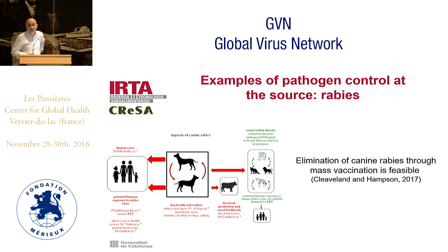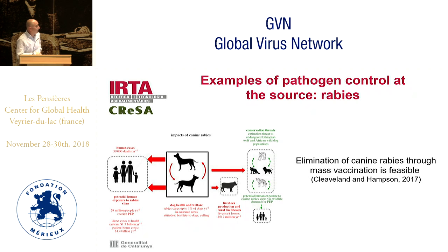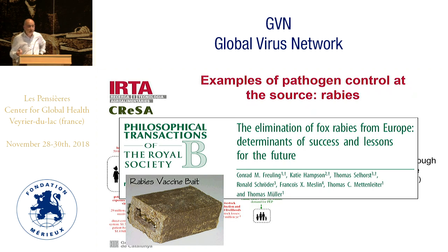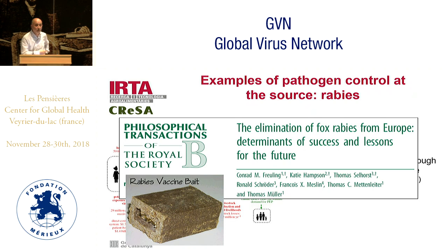Rabies is another example: the elimination of canine rabies through mass vaccination works quite well in general terms. There are some wildlife populations that may maintain the virus; however, the rabies vaccine bait also works, and in Europe fox rabies has been eradicated or eliminated through the use of rabies vaccine bait.